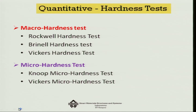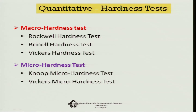At a later stage, quantitative hardness tests evolved. There are two classifications: macro hardness tests, where not much sample preparation is needed, and micro hardness tests. In the macro category we have the Rockwell, Brinell, and Vickers hardness tests, and in the micro hardness category the Knoop and Vickers micro hardness tests.